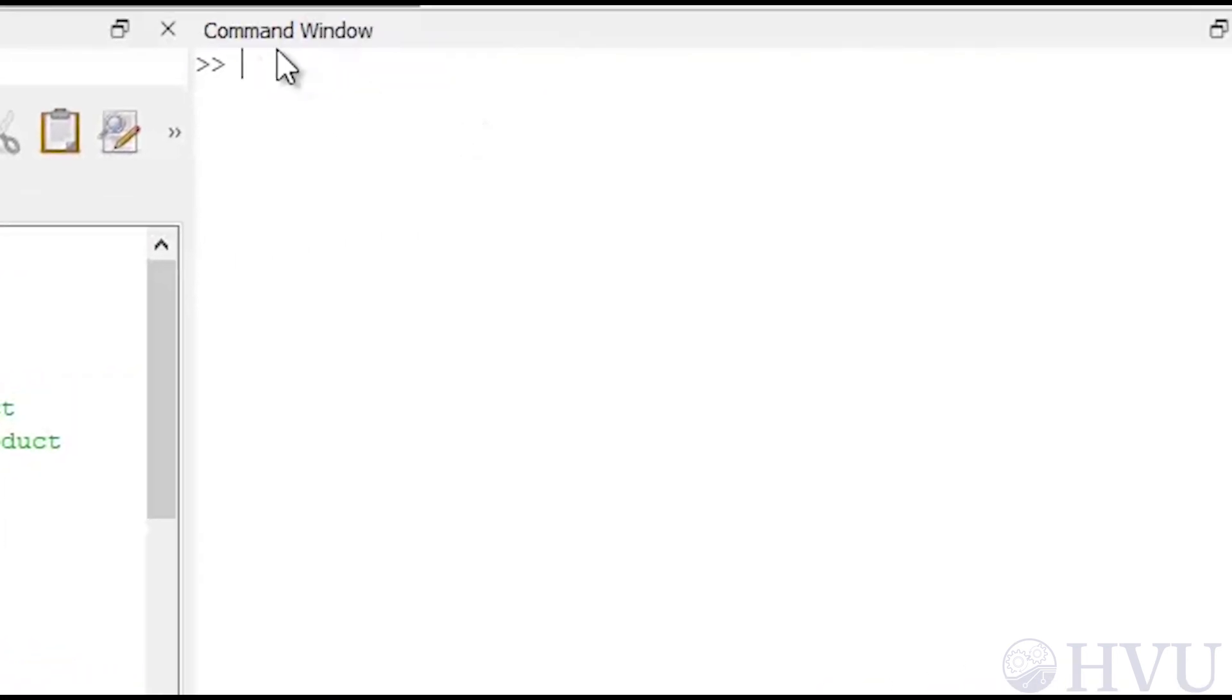For my final check of the function, I'll define A and B in the workspace, and call the function. I'll check that against Octave's built-in matrix multiplier. Looks like it's working.